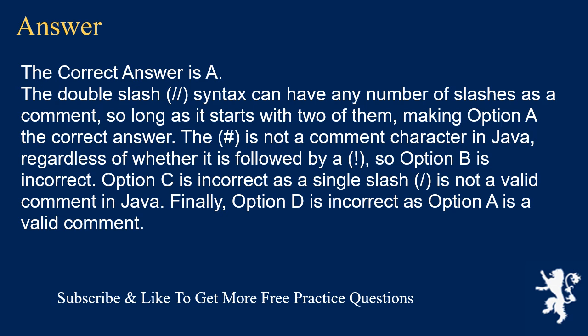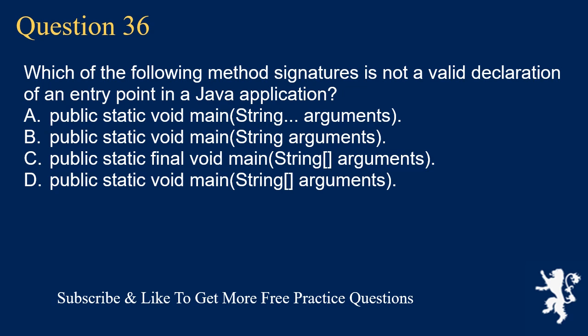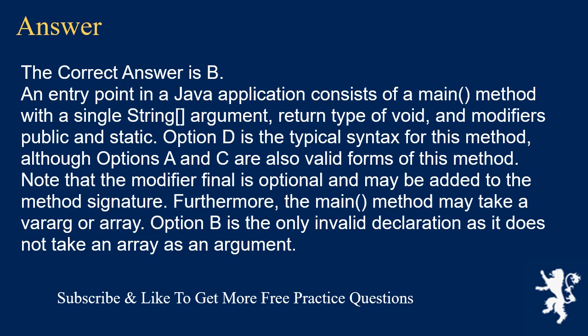Question 36: Which of the following method signatures is not a valid declaration of an entry point in a Java application? A) public static void main(String[] arguments), B) public static void main(String arguments), C) public static final void main(String[] arguments), D) public static void main(String[] arguments). The correct answer is B. An entry point consists of a main method with a single String argument, return type void, and modifiers public and static. Options A, C, and D are all valid forms. The modifier final is optional. The main method may take a vararg or array. Option B is the only invalid declaration as it does not take an array as an argument.